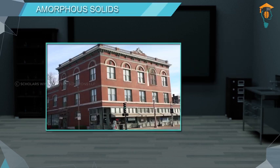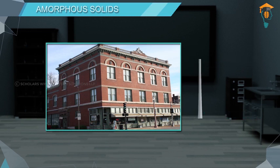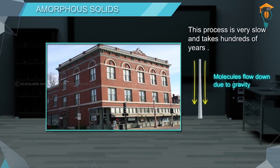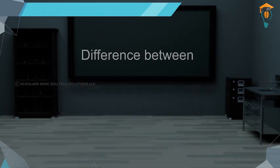If we observe the glass windows of very old historical buildings, we notice that the glass panes are thicker at the bottom compared to the top. This is because some molecules on the top of the glass flowed down due to gravity and accumulated at the bottom over hundreds of years. Due to this ability to flow like liquids, amorphous solids are also called supercooled liquids or pseudo solids.